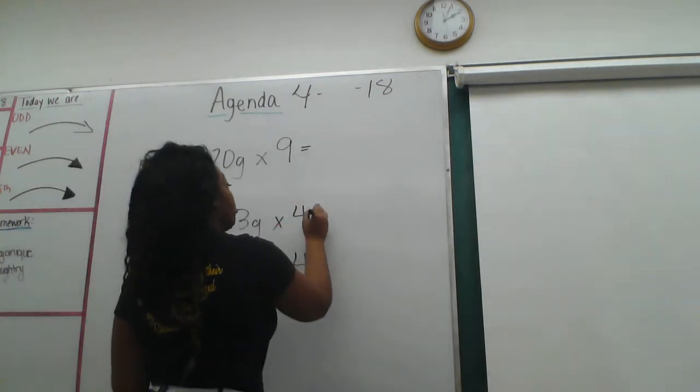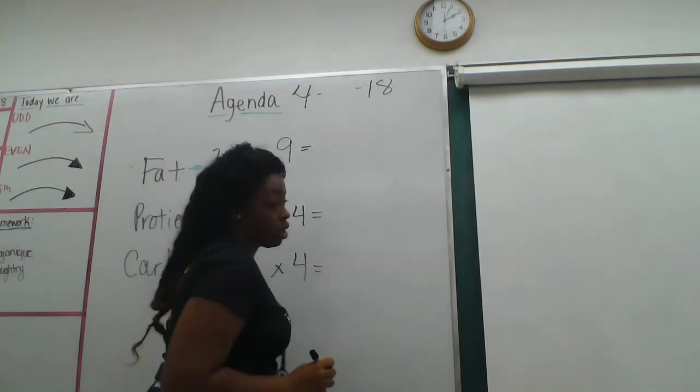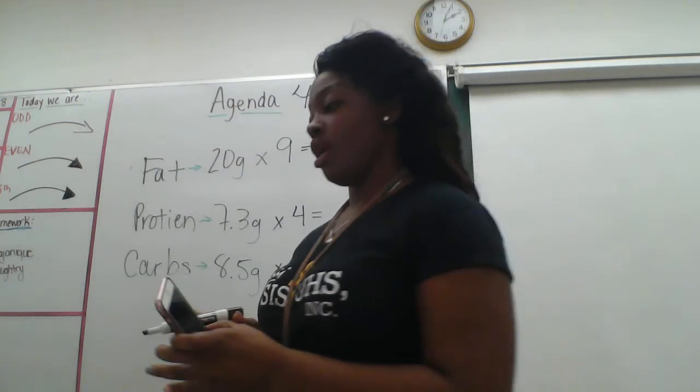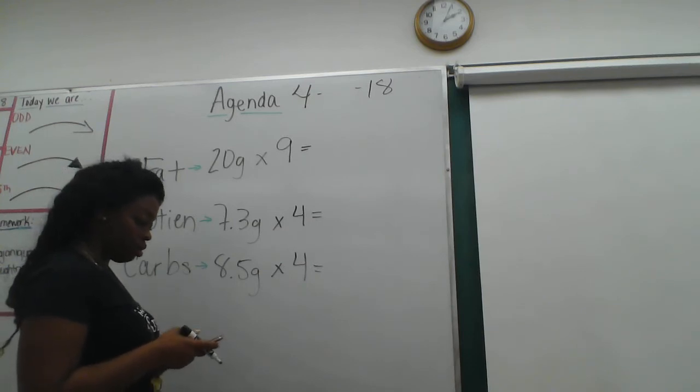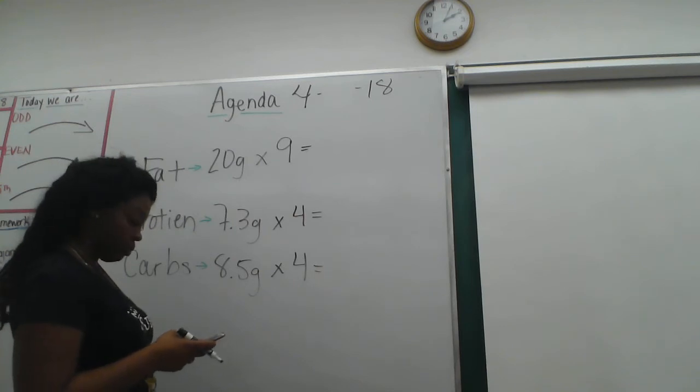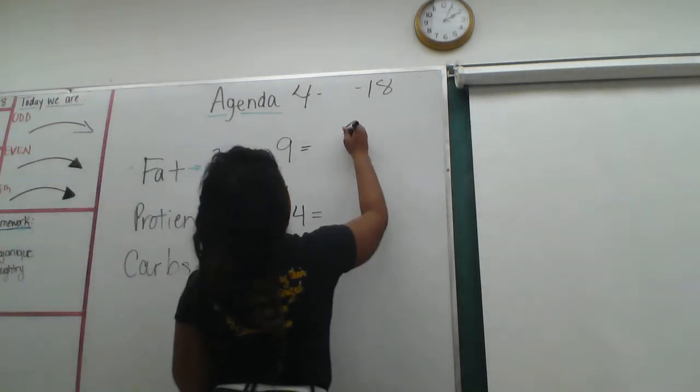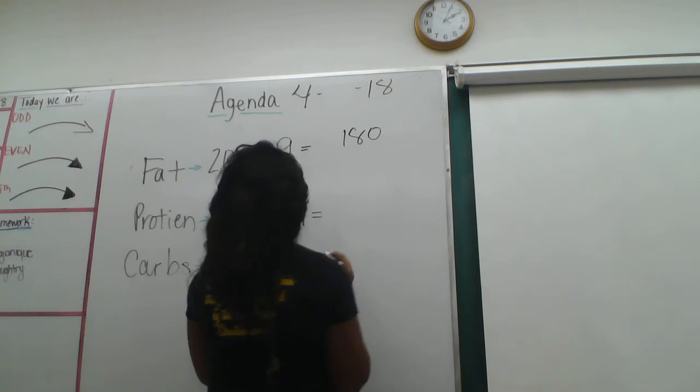Once you've got them together, you're going to get your calories for each category. So I'm going to multiply 20 times 9, and that's going to give me 180.